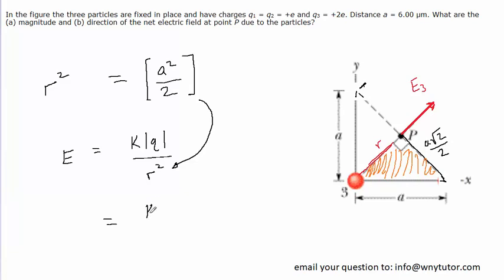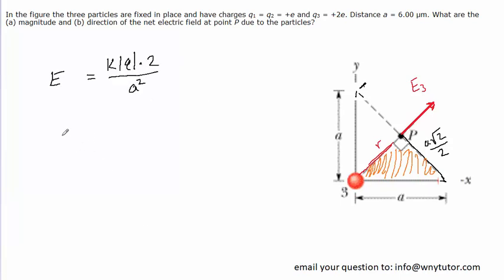So our electric field would become K times Q divided by A squared over 2. Now to divide by a fraction, you can use something called keep-change-flip, where you keep the numerator the same, you change the division to multiplication, and then you flip that fraction around. So that would become 2 over A squared. And so now to find the magnitude of this electric field, we can go ahead and plug in the known values.